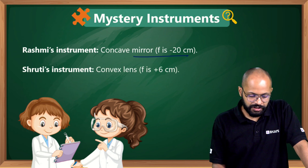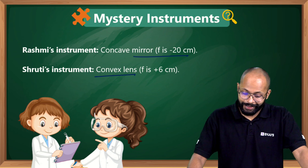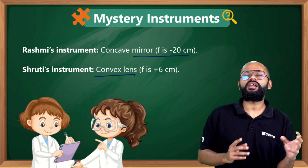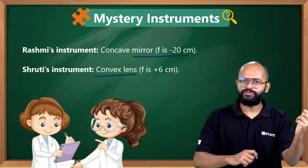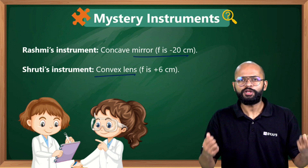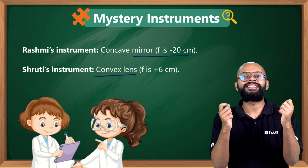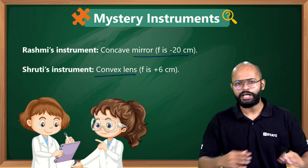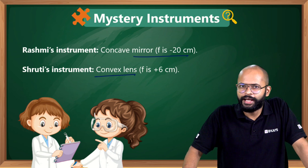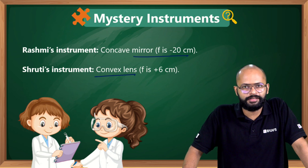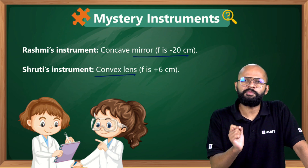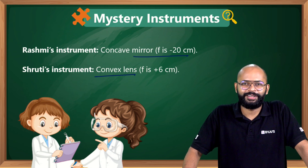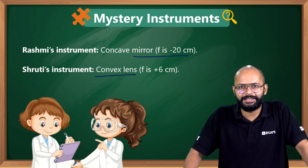So our conclusions: Rashmi's instrument is a concave mirror with focal length −20 cm, and Shruti's instrument is a convex lens with focal length +6 cm. Remember — mirror formula uses plus, lens formula uses minus, and always use proper signs when substituting values. This is how we helped Rashmi and Shruti, and deepened our understanding of the mirror versus lens formula topic.